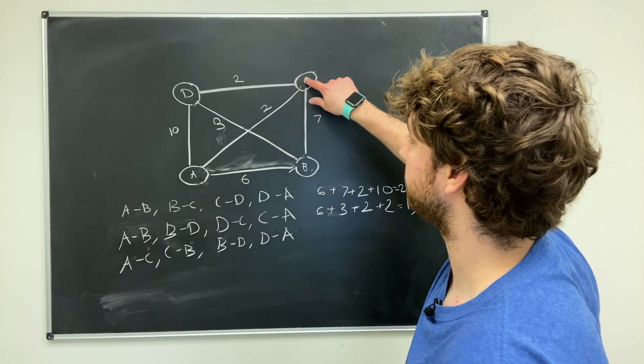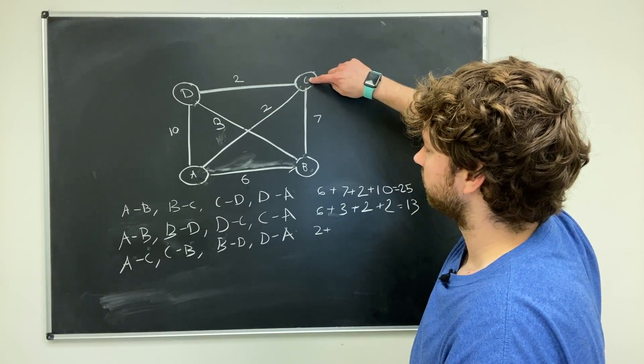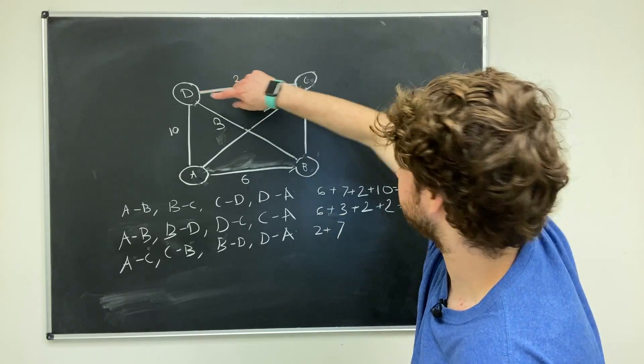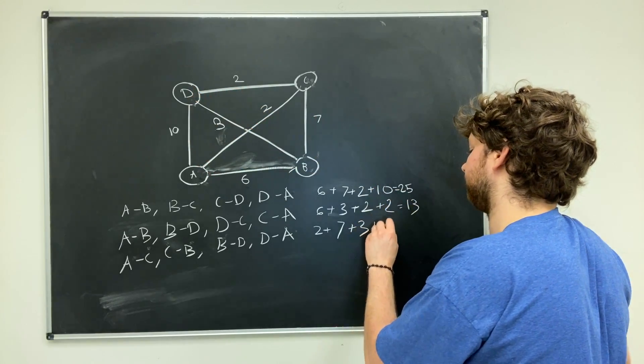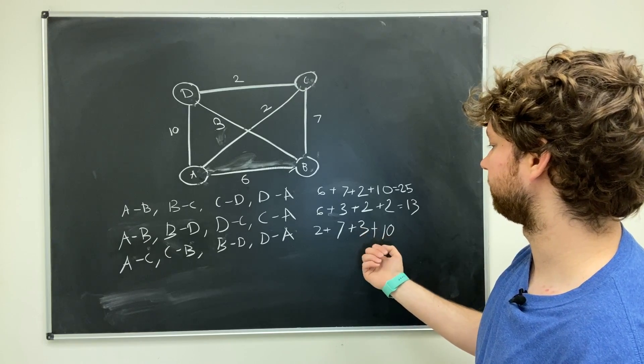Let's try this last one here. A to C, that's 2. C to B is 7. Not so great. So this one's going to be 22.